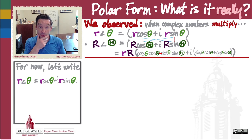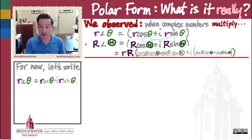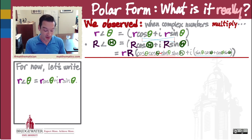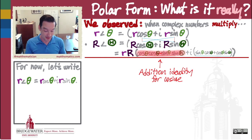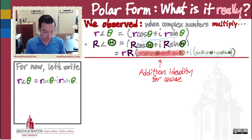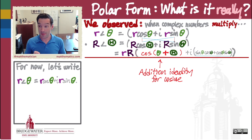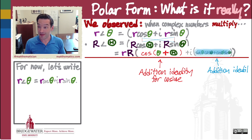You might look at this real part and this imaginary part and say, I've seen those formulas somewhere before. Where we've seen those formulas is as the addition identities for cosine and sine respectively. So cosθ·cosΘ − sinθ·sinΘ is just another name for cos(θ + Θ), and sinθ·cosΘ + cosθ·sinΘ is the addition identity for sine, another name for sin(θ + Θ).